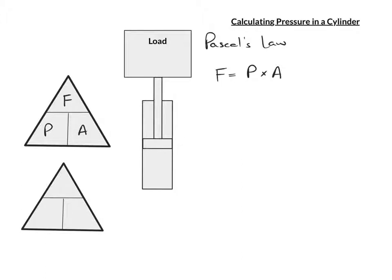So let's create some numbers. Let's say we have a 1,000 pound load, and let's say we have a 10 inch squared piston. So we have two items of the formula already. We can enter them into the trades triangle. We can say that force is the 1,000 pounds sitting on top of the 10 inch squared area.